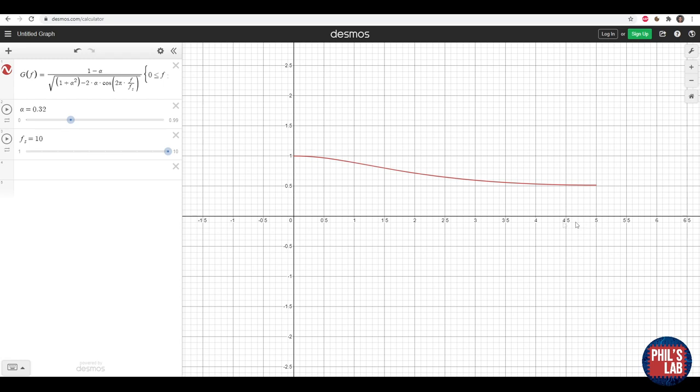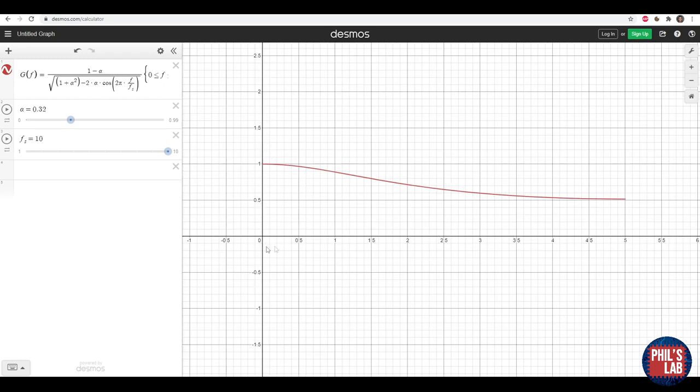Because of the Nyquist limit I'm only running from 0 hertz to 5 hertz which is fs over 2 on my x-axis. On my y-axis I have my magnitude. If I put a DC signal in I will get the same amplitude DC signal out. As my frequency increases my gain of this filter drops. So this is a low pass filter. The low frequency content is relatively unaffected whereas high frequency content is attenuated.